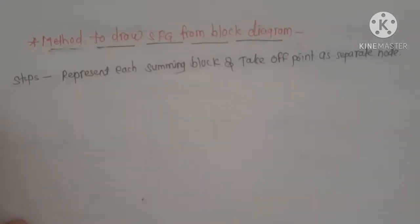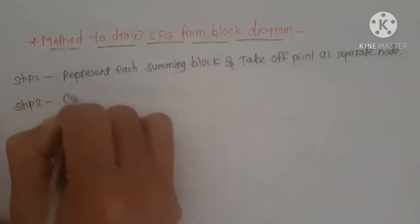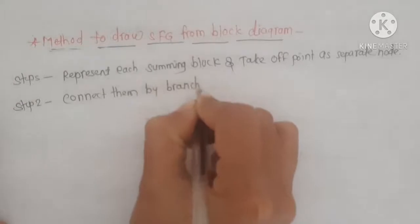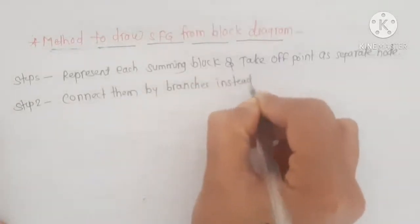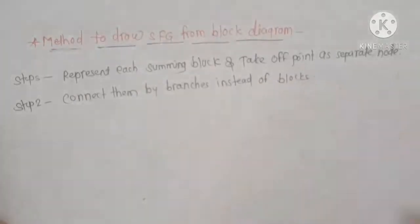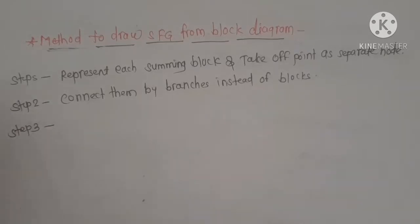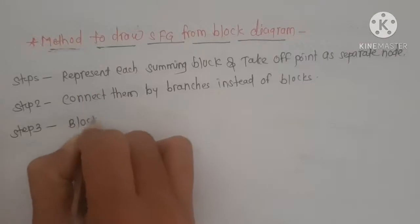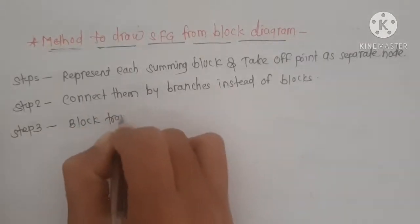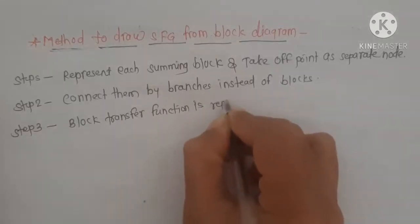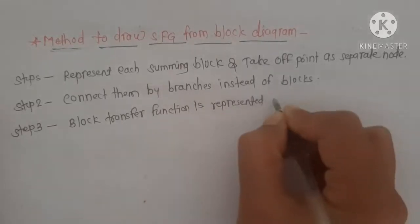Next, connect them by branches instead of blocks. The third step is: the block transfer function is represented as a branch gain. In the system equation, we saw that the constant of that variable is represented as a branch gain. Here, in the case of a block diagram, the block transfer function is represented as a branch gain.